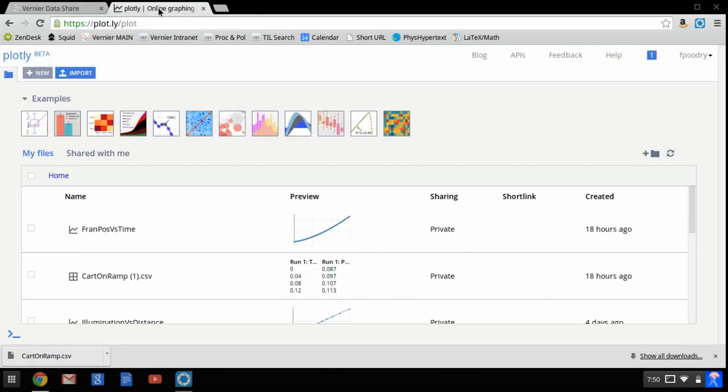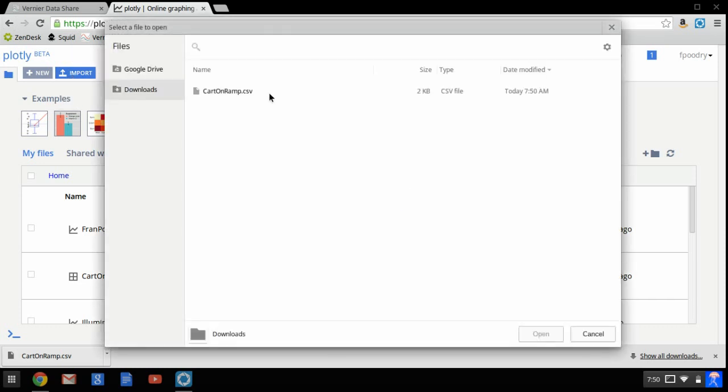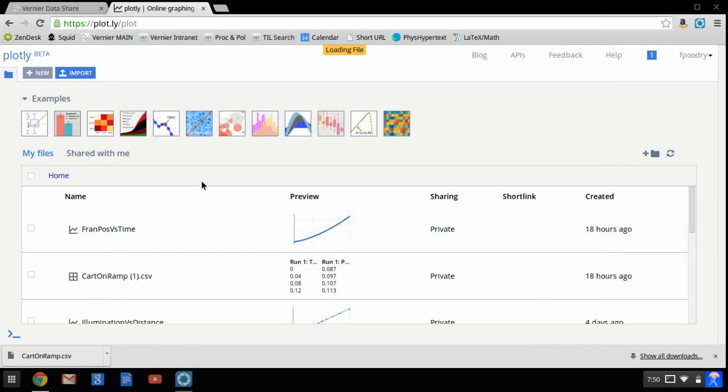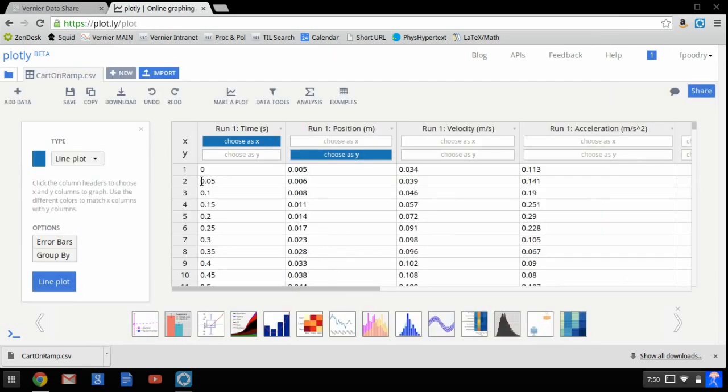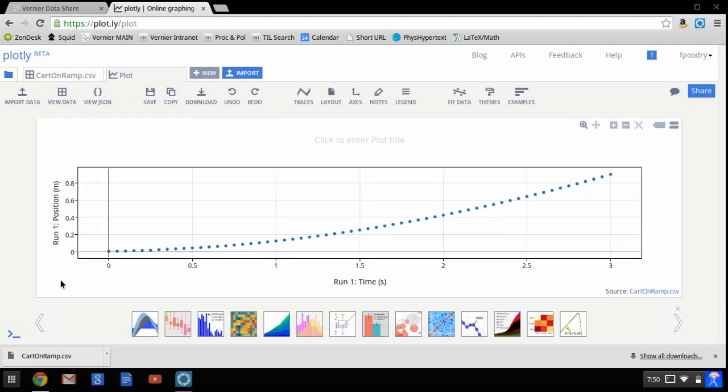Next, I go to my Plotly where I've already signed into my free online account and choose to import that file. It opens the file and automatically chooses the first two columns as your X and Y columns. I'm going to change this to a scatter plot and go ahead and see what that looks like. It looks exactly like I saw in DataShare, only this time the dots aren't connected.